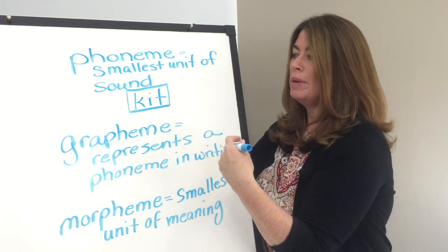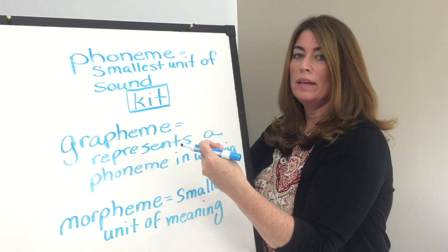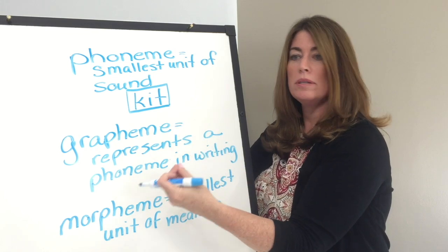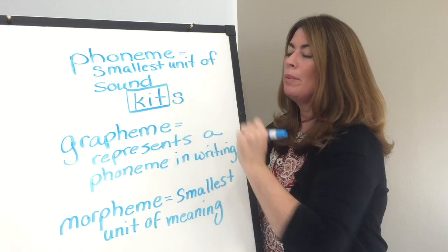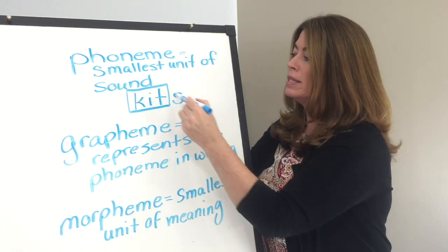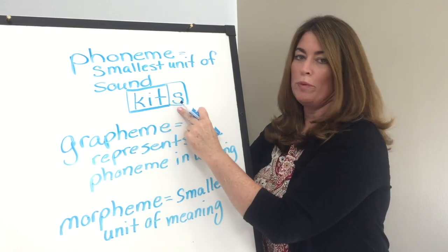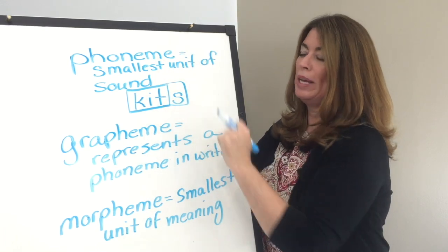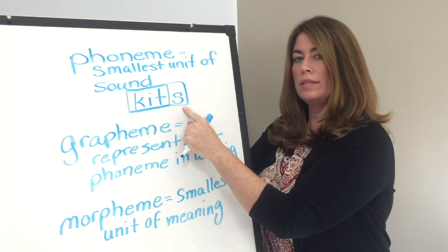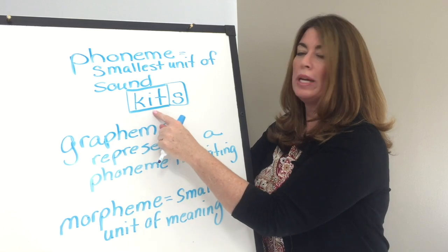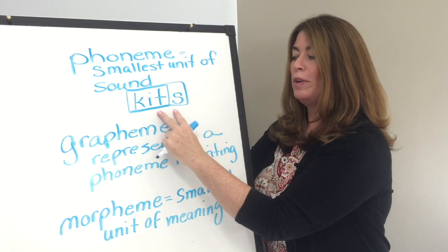If I had 'cupcake,' I would have two morphemes — I would have 'cake' and 'cup.' A cupcake is a cake that fits in a cup, so that would be two morphemes. Now if I had 'kits,' I would have more than one morpheme, because the S at the end means more than one. So now I have two morphemes. And if I go back to my phonemes, I have four phonemes — k, i, t, s — and also four graphemes representing those four sounds. But I have two morphemes.